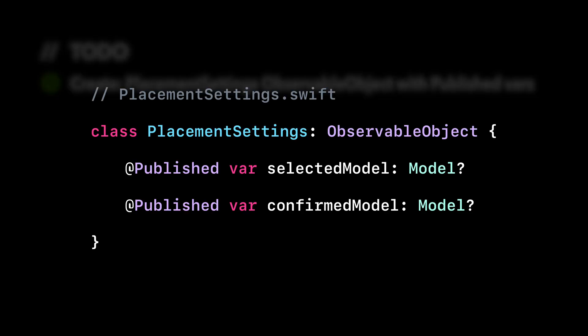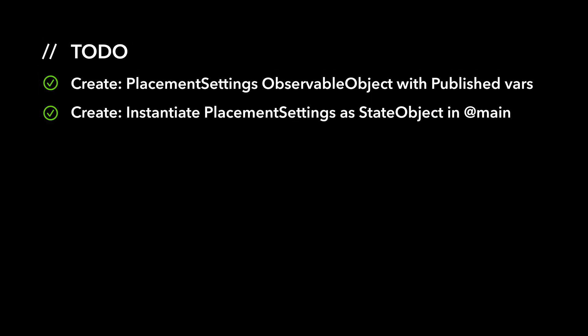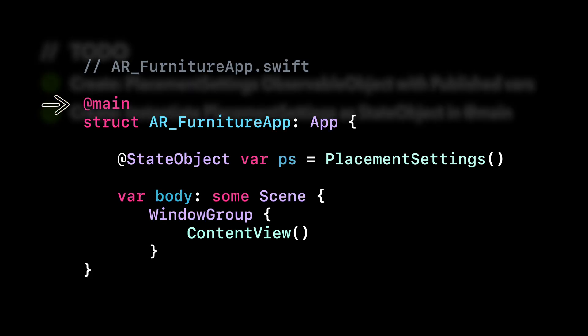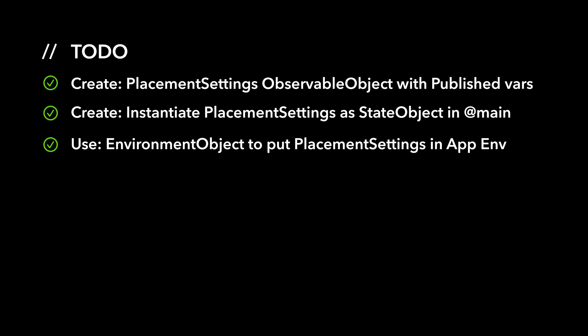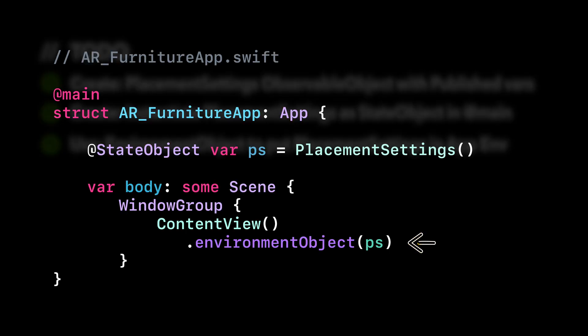First, we have to create a new class called PlacementSettings. This object will adopt the observable protocol and will contain several published properties. Second, we'll create a state object for PlacementSettings in our top-level app instance. The top-level app instance is marked by the main attribute, which specifies the app's main entry point to the Swift compiler. Next, we'll use an environment object view modifier to put the PlacementSettings state object into the app environment. Any descendant view of the view to which we apply the environment object modifier will be able to access the PlacementSettings data.